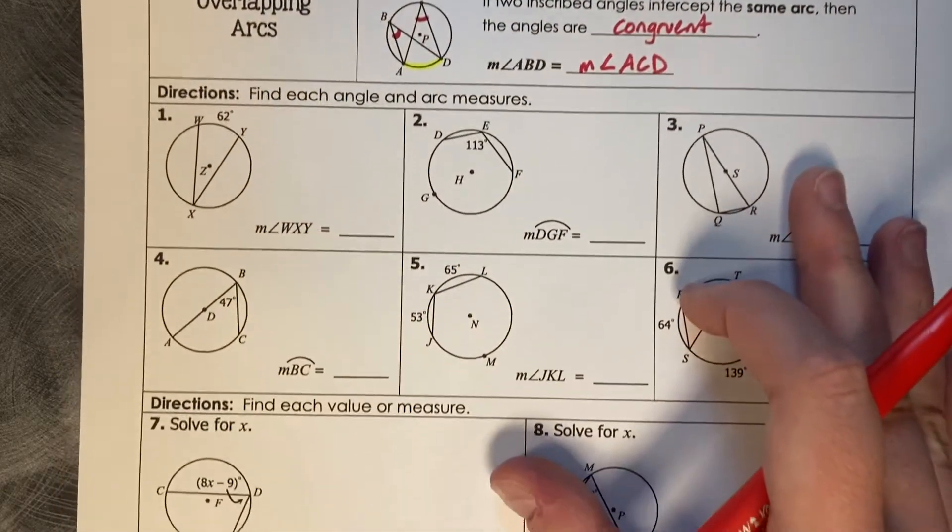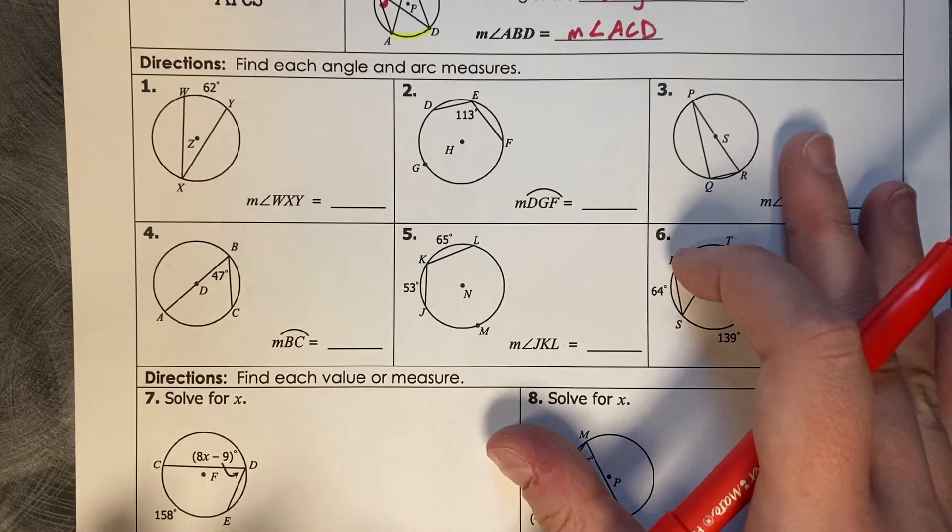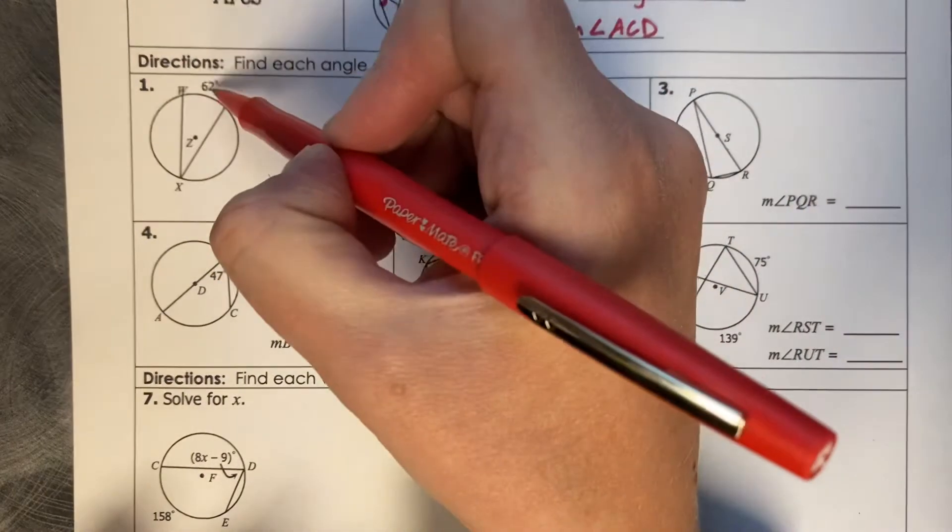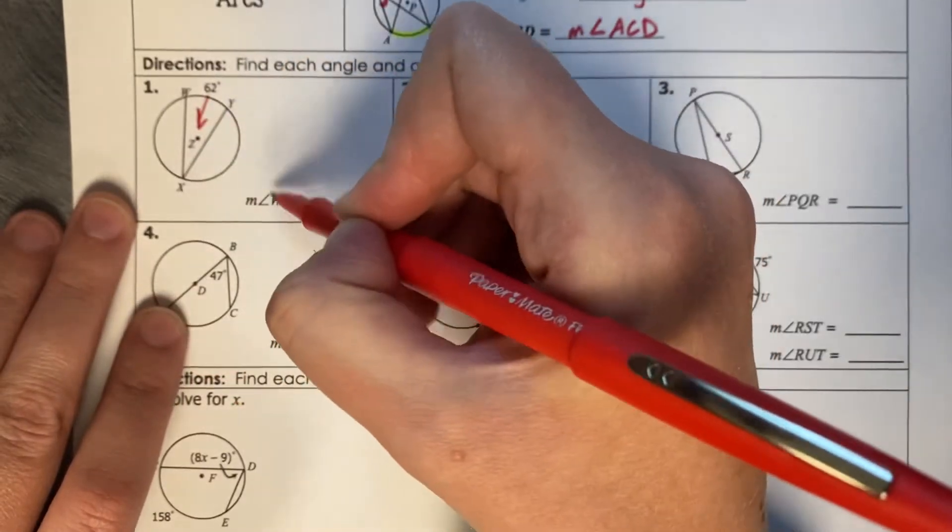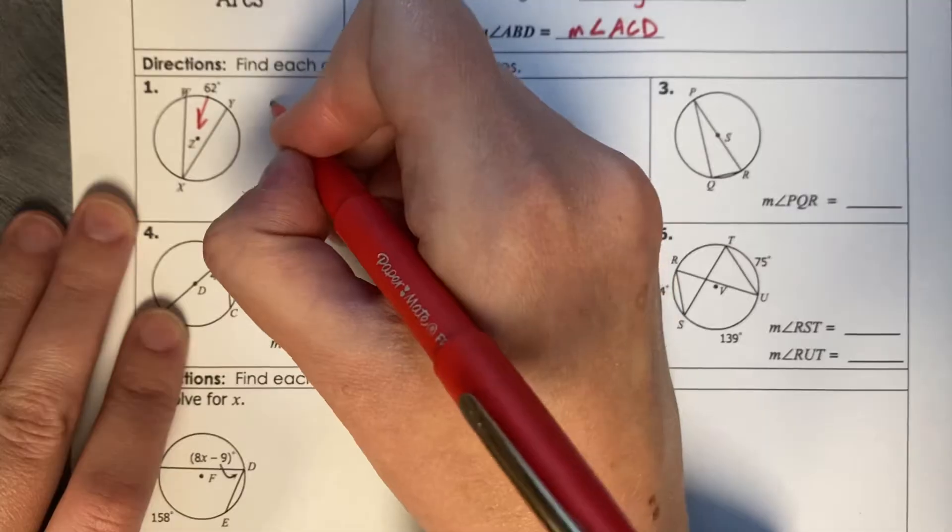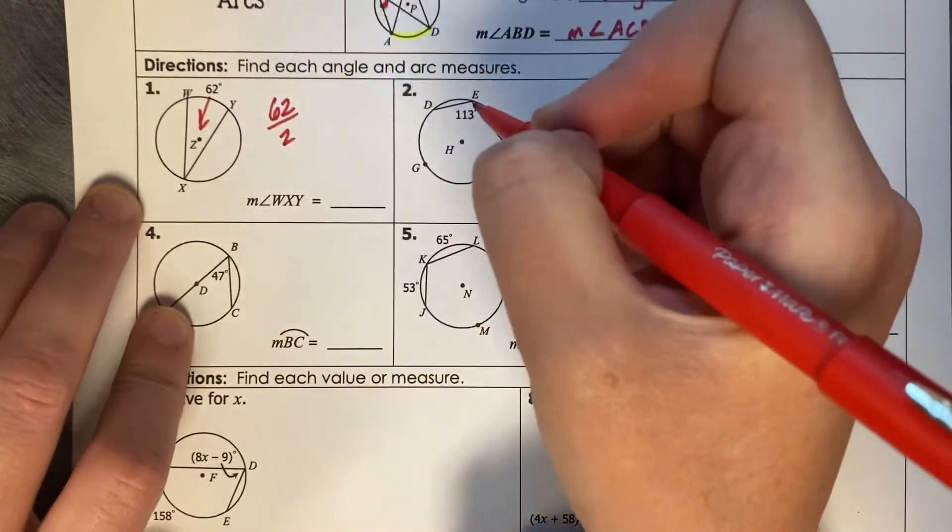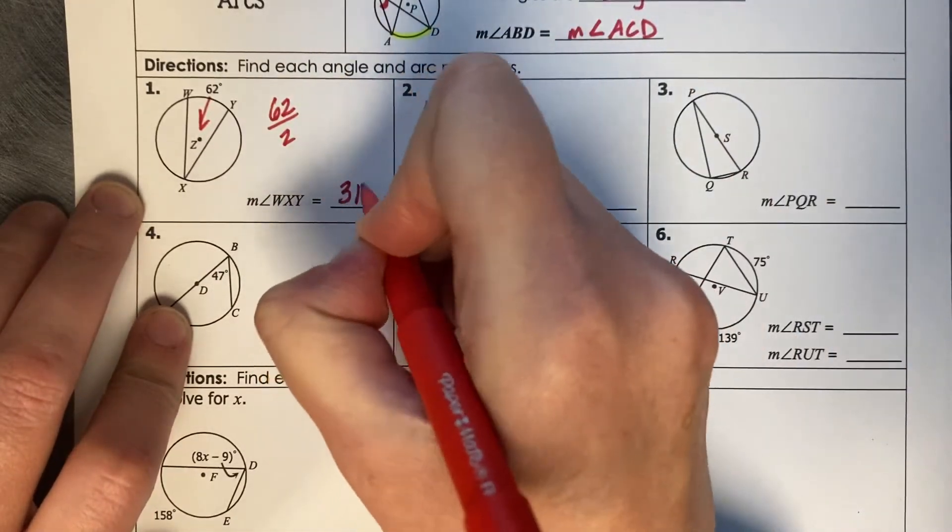So let's try some examples. Find each angle and arc measure. So if this is 62 degrees, to go to its inscribed angle WXY, we divide it in half. 62 divided by 2 is 31 degrees.